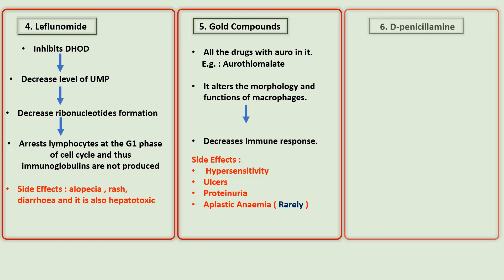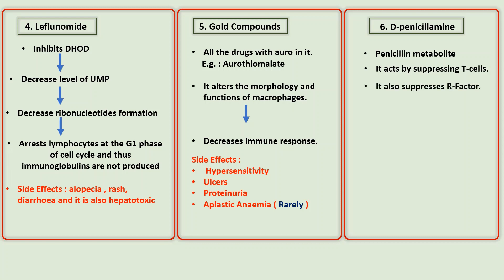The next drug is D-penicillamine, which is basically a penicillin metabolite. It acts by suppressing T-cells and the rheumatoid factor responsible for this disease. Side effects include proteinuria.